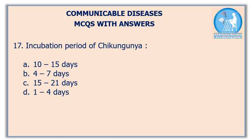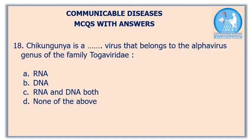Seventeenth question: incubation period of Chikungunya is — option A: 10 to 15 days, option B: 4 to 7 days, option C: 15 to 21 days, option D: 1 to 4 days. The correct answer is option B: 4 to 7 days. Sometimes the range of incubation of Chikungunya falls between 1 to 12 days.